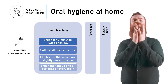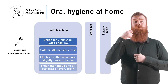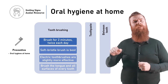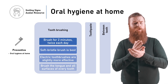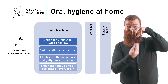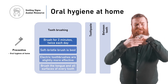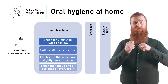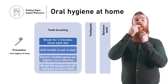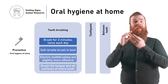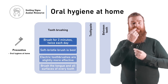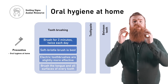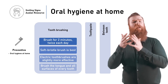Toothbrushes with soft bristles are the best choice. Electric toothbrushes can also help you brush better. Make sure you reach all tooth surfaces when you are brushing. You can also gently brush the top of your tongue. Learn more about tooth brushing in our other Smiling Signs videos.